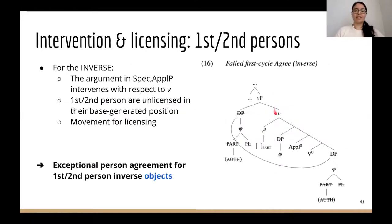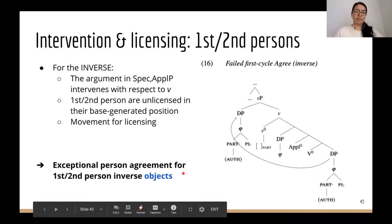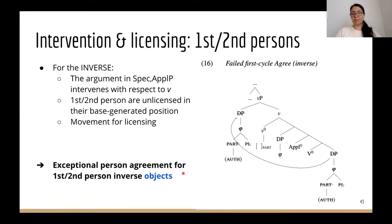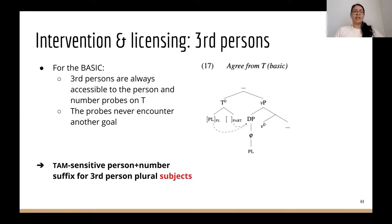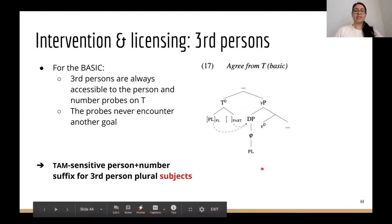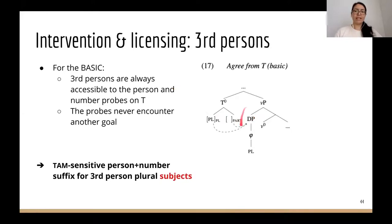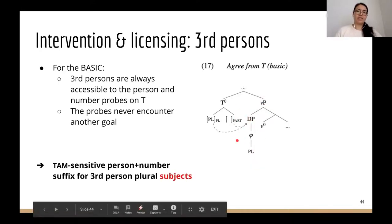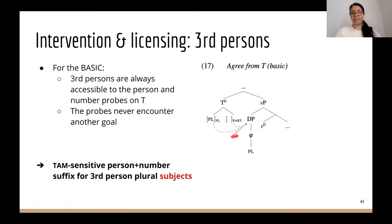The higher licensing from further up in the structure is responsible for that exceptional agreement for first and second person inverse objects. Now moving to the puzzle concerning third persons: in the basic, third person subjects are introduced as external arguments in Spec-vP. In this position they are always accessible to the person and number probes on T, so the probes never encounter another goal—we just get straightforward subject agreement.